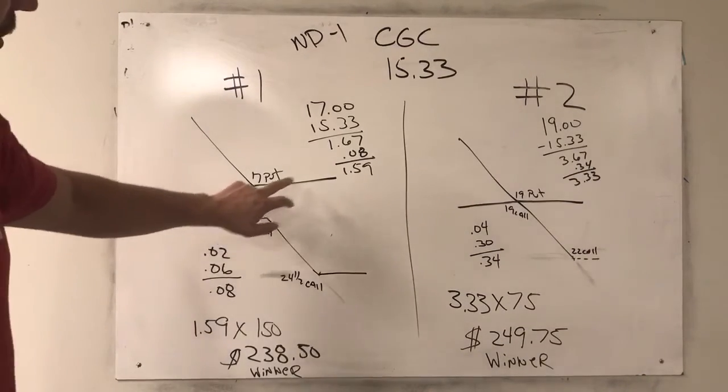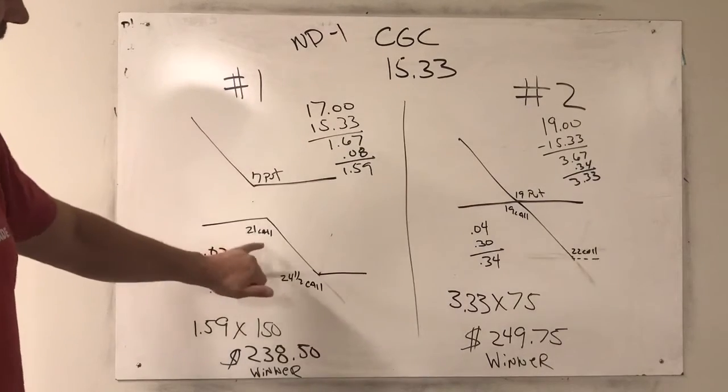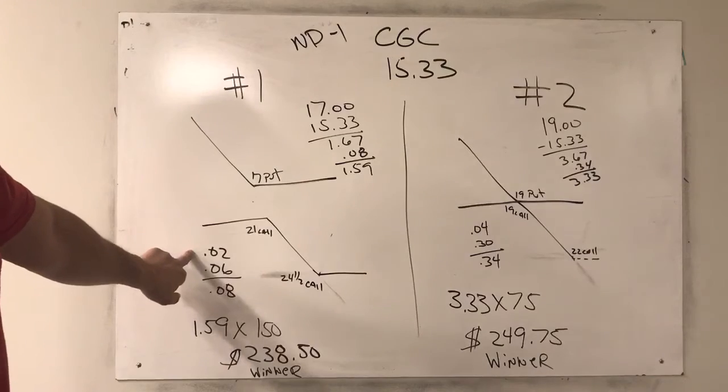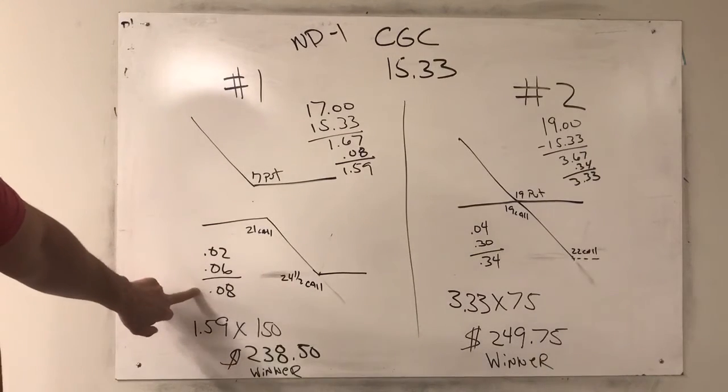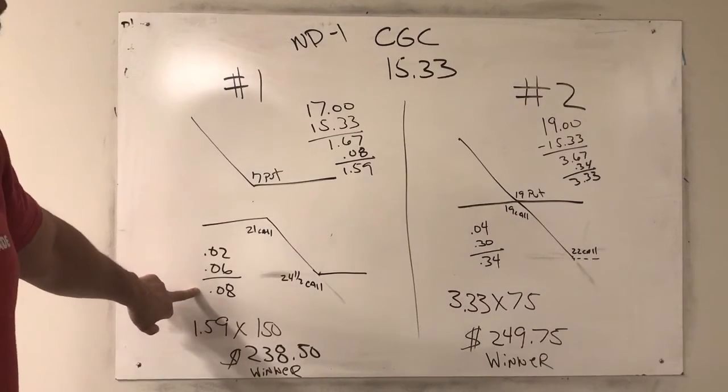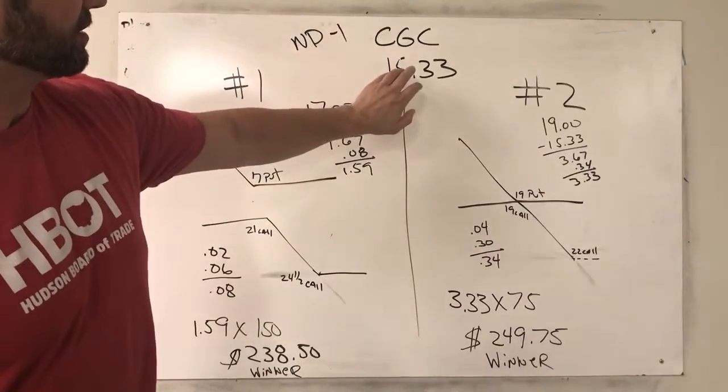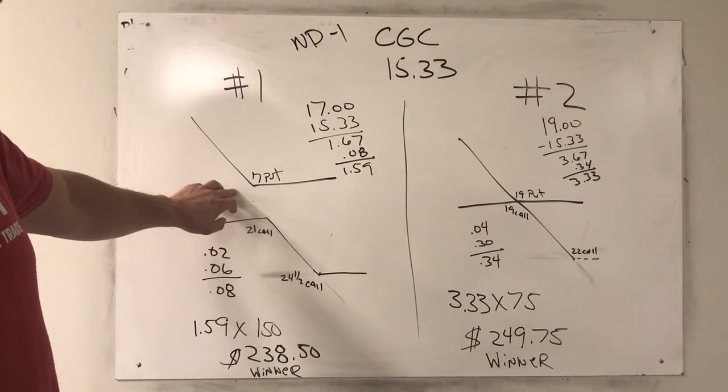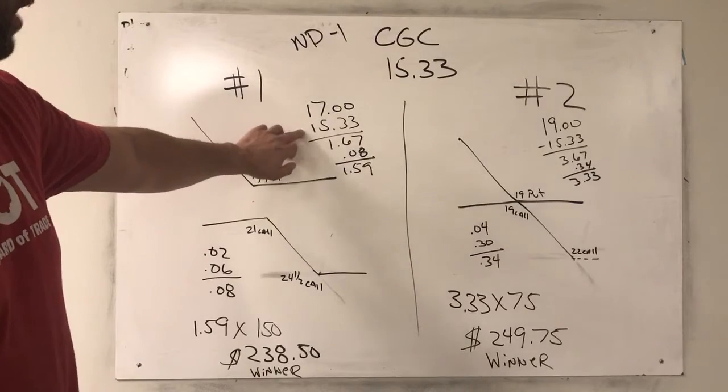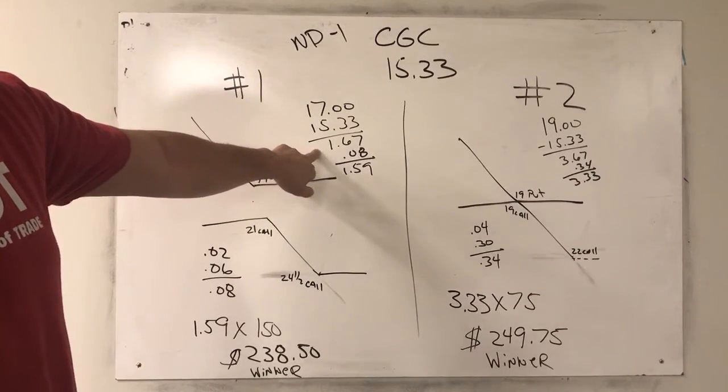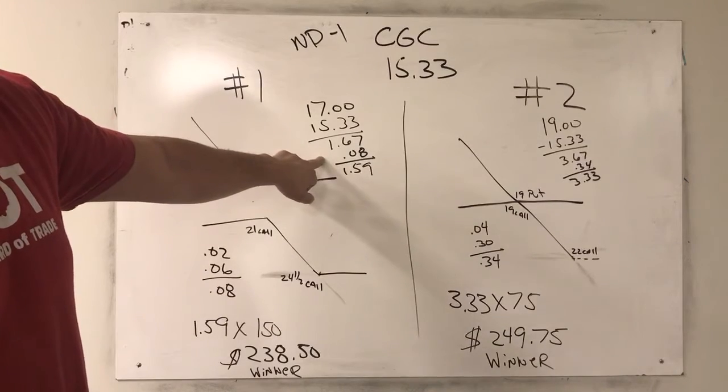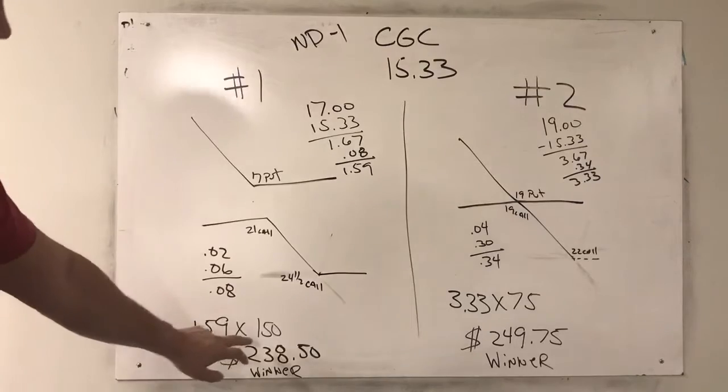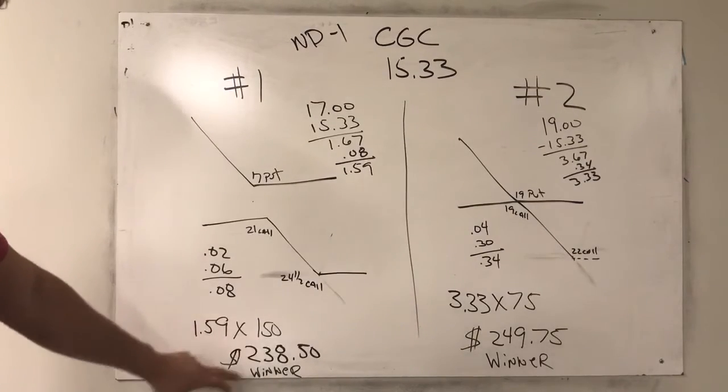When the stock started to sell off, our only risk was this short 21 call. We bought that in for two cents. We were into the trade for a total of eight cents. CGC settled at $15.33 and we own the 17 put. So 17 minus 15.33 is a dollar 67, less the eight cents the trade cost, leaves us with a dollar 59 a share profit.